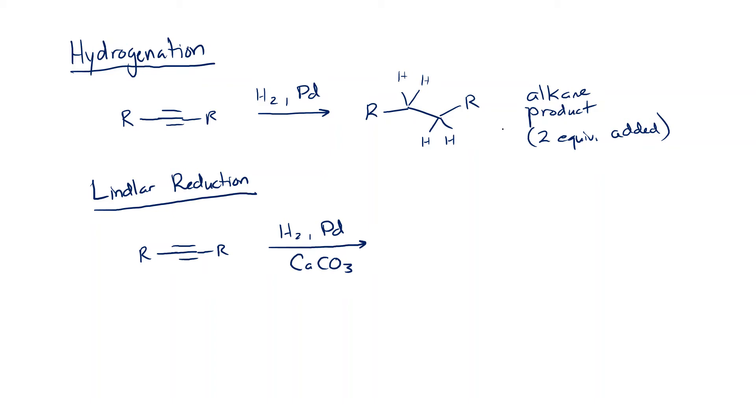So when you add calcium carbonate, this compound here is what makes it a Lindlar reduction. Without this, you're just doing a standard hydrogenation, you'll add two equivalents. But this makes all the difference. So if that is present, what happens is we only add. This poisons the metal so that only one equivalent of H2 is added.